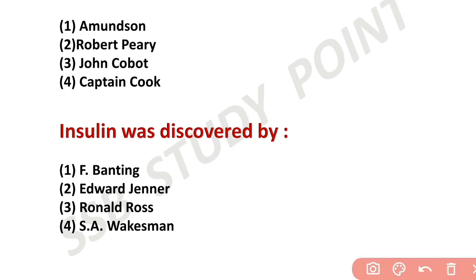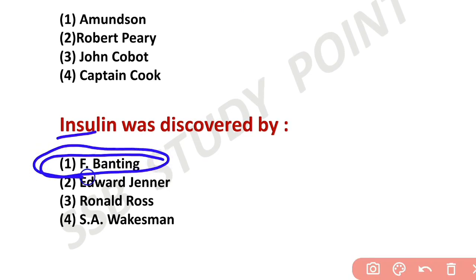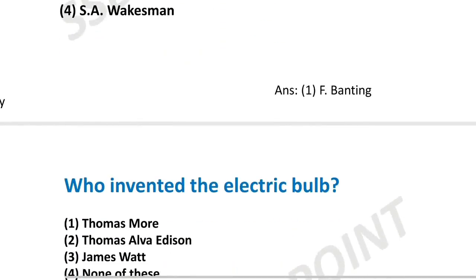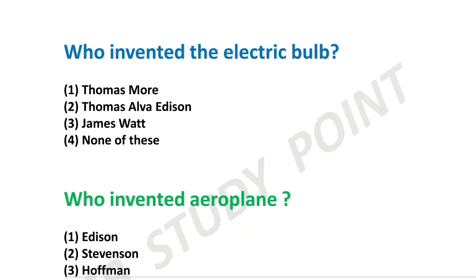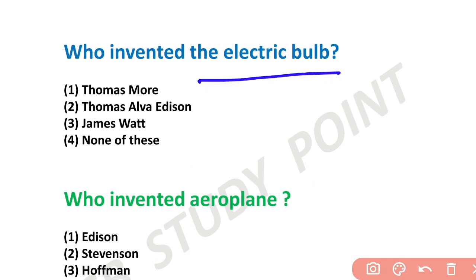Alexander Fleming invented Penicillin. For Insulin, the inventor is Frederick Banting. Who invented the electrical bulb? The electric bulb was invented by Thomas Alva Edison — so Edison is associated with the bulb.